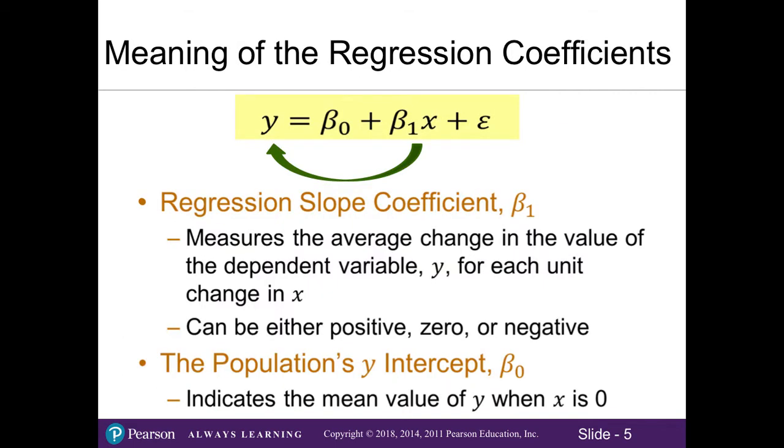The regression slope coefficient, β₁, measures the average change in the value of our dependent variable y for each unit change in x. If we see a positive slope, for each unit of x, our y will go up by the slope amount. Similarly, if our slope is negative, we'll see a decrease for each unit change in x. With our intercept, or β₀, this is the value of y when x is zero. If we imagine our regression line, this is where the line crosses the y-axis.